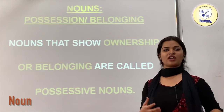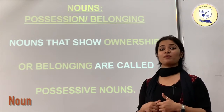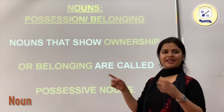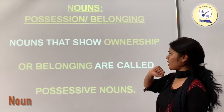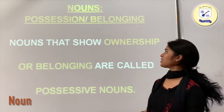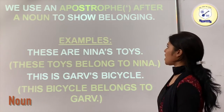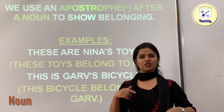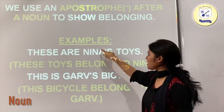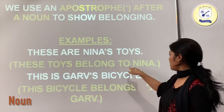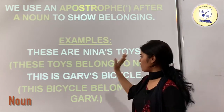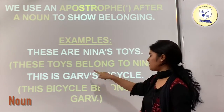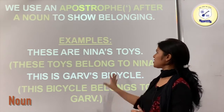Now, possessive nouns show ownership or belonging. If I say my handbag, it belongs to me — that is a possessive noun. We use an apostrophe to show belonging. For example: Nina's toys — the toys belong to Nina. Khushbu's watch — the watch belongs to Khushbu. We put apostrophe s after the name. Gurv's bicycle — the bicycle belongs to Gurv.